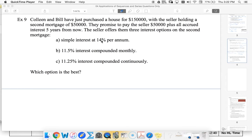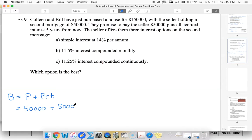Simple interest at 14 percent means our balance is going to be principal plus PRT. So $50,000 plus $50,000 times 14 percent times five years. That's our first option.